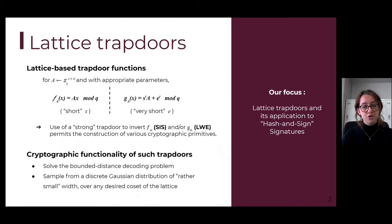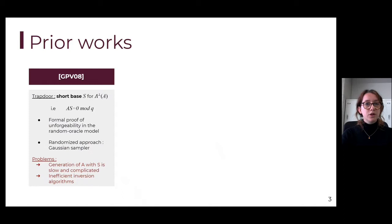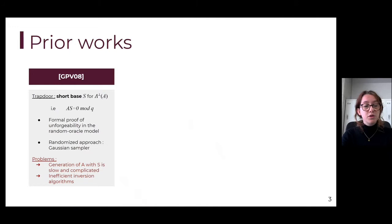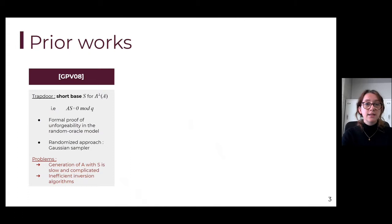I would like to explain the line of work we are following and the prior works. First, the GPV construction in 2008 introduced a trapdoor that is a short basis for the query lattice defined by the matrix A. Using this short basis, they were able to give a formal proof for a hash-and-sign signature, and they introduced a randomized approach using a Gaussian sampler, allowing the Gaussian distribution to hide some information. This was a really pioneering work, but it had a few problems — in particular, the generation of A with the trapdoor was slow and complicated with some inefficient algorithms.